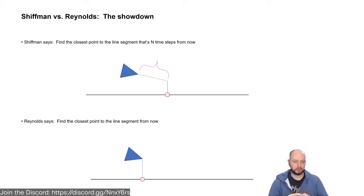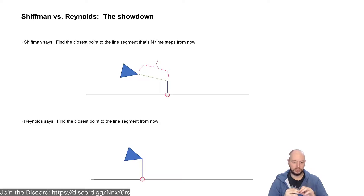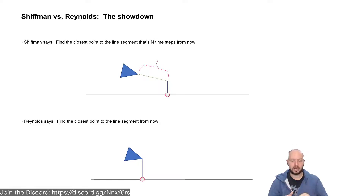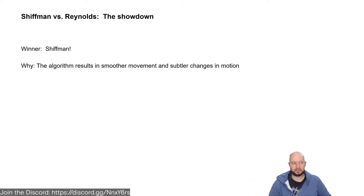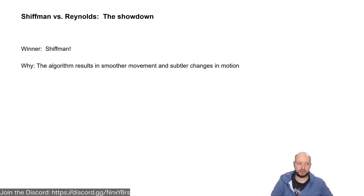There are two approaches: the Schiffman approach figures out the future point and line some time steps from now, while Reynolds just finds the closest point to the line segment now. The Schiffman approach results in much smoother movement. Having a number of steps and figuring out how many time steps from now you're going to be on or off the path allows you to make slightly better decisions in terms of the behavior to apply to your agent in that particular frame.